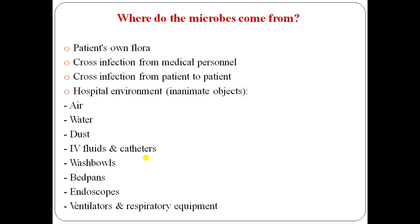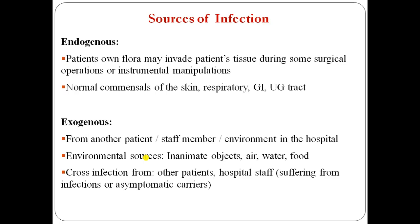The sources of microbes in nosocomial infection include the patient's own flora, cross infection from medical personnel, and cross infection from patient to patient. Hospital environment sources include air, water, dust, IV fluids, catheters, wash walls, bed pans, endoscopes, ventilators, and respiratory equipment — all of these can cause nosocomial infection.